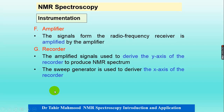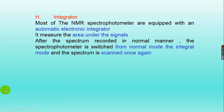The amplifier enhances the weak signals received from the radio frequency receiver. After that, the recorder drives the x-axis to produce the NMR spectrum. Finally, the integrator is an automatic electronic integrator that measures the area under each peak or signal.